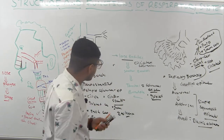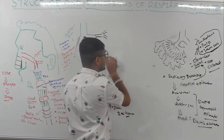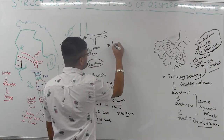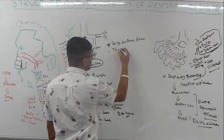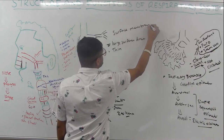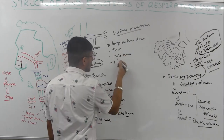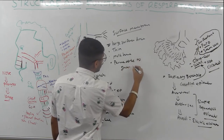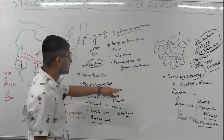For good gas exchange, a few things are required. You need a large surface area, a very thin epithelial surface membrane, the membrane should be moisturized, and it should be permeable to gas molecules.